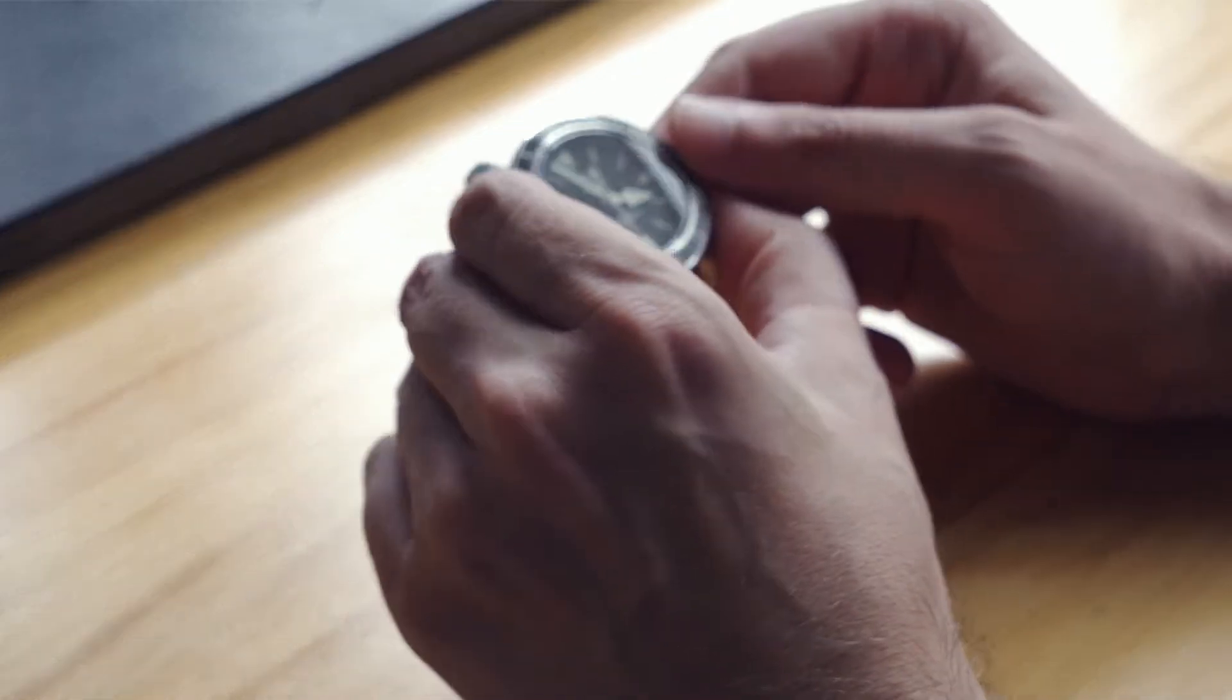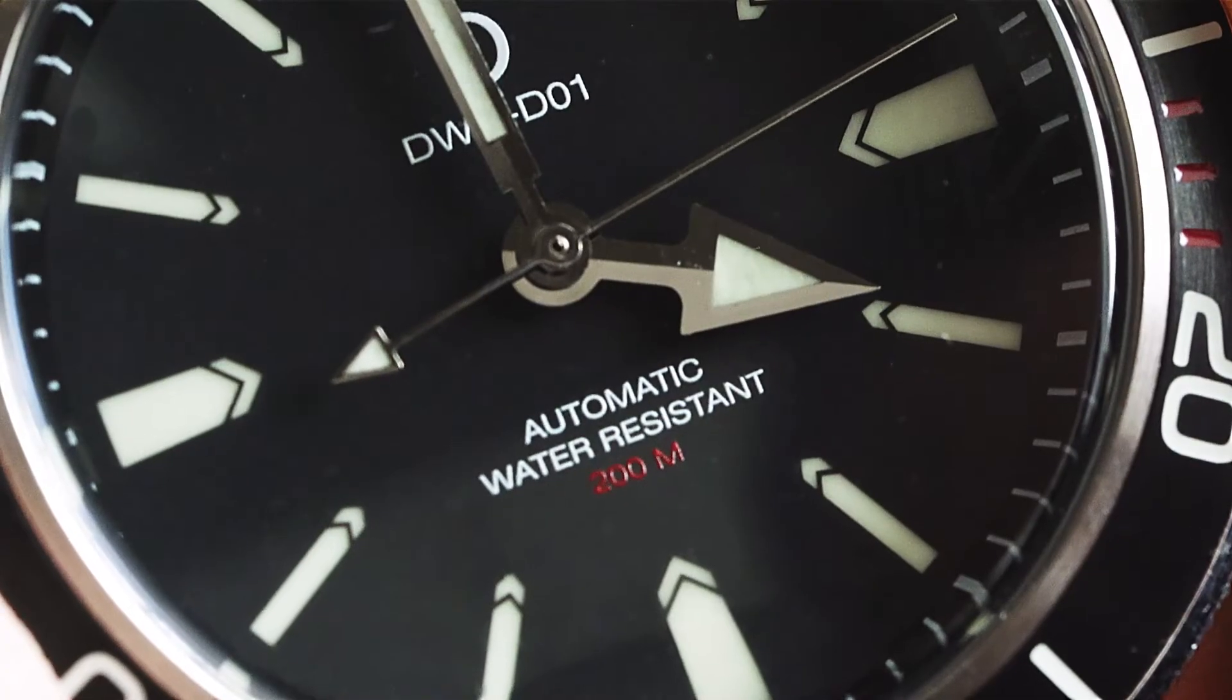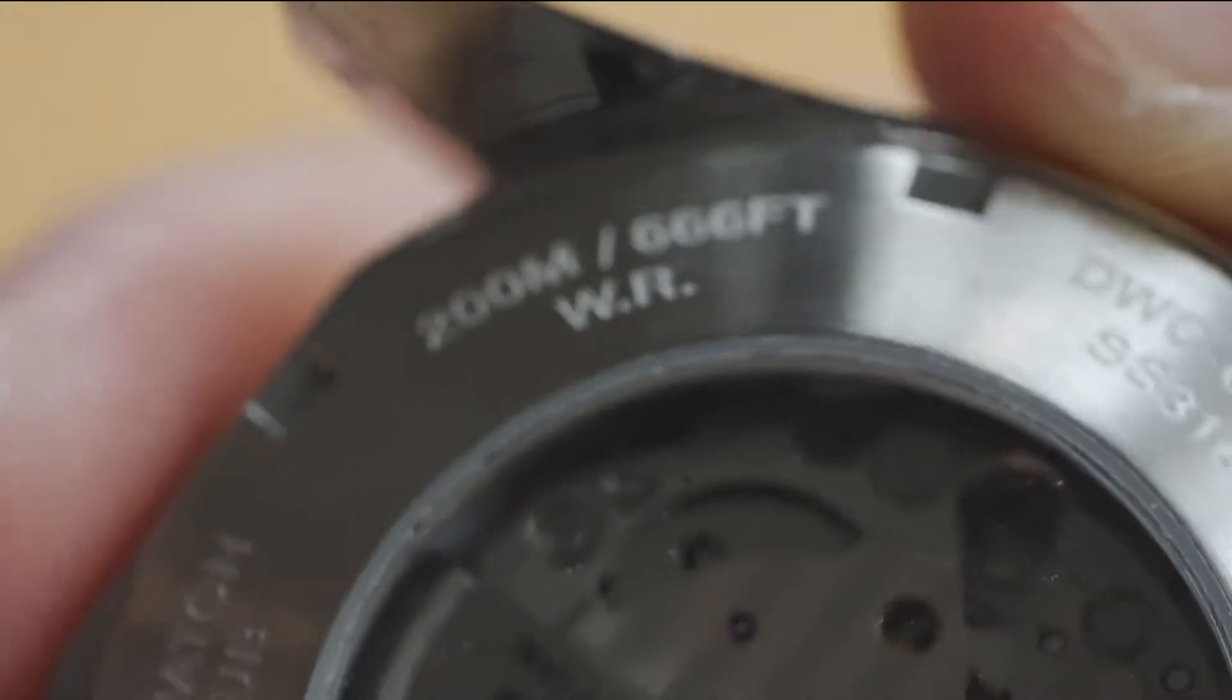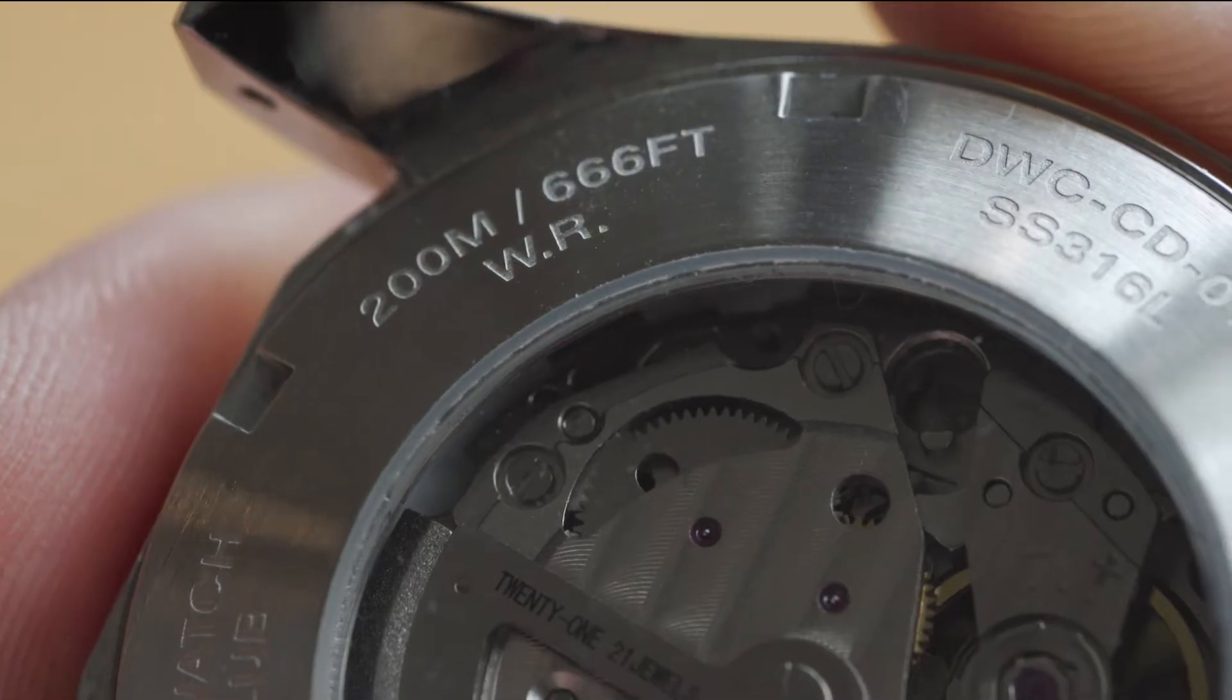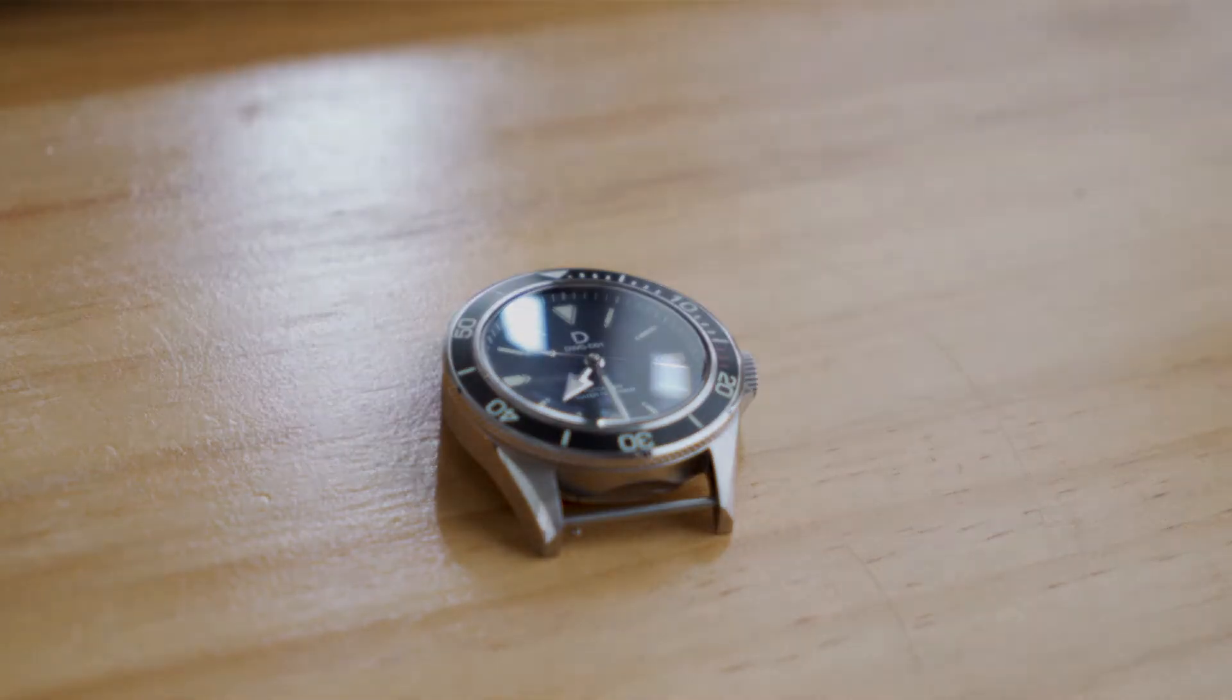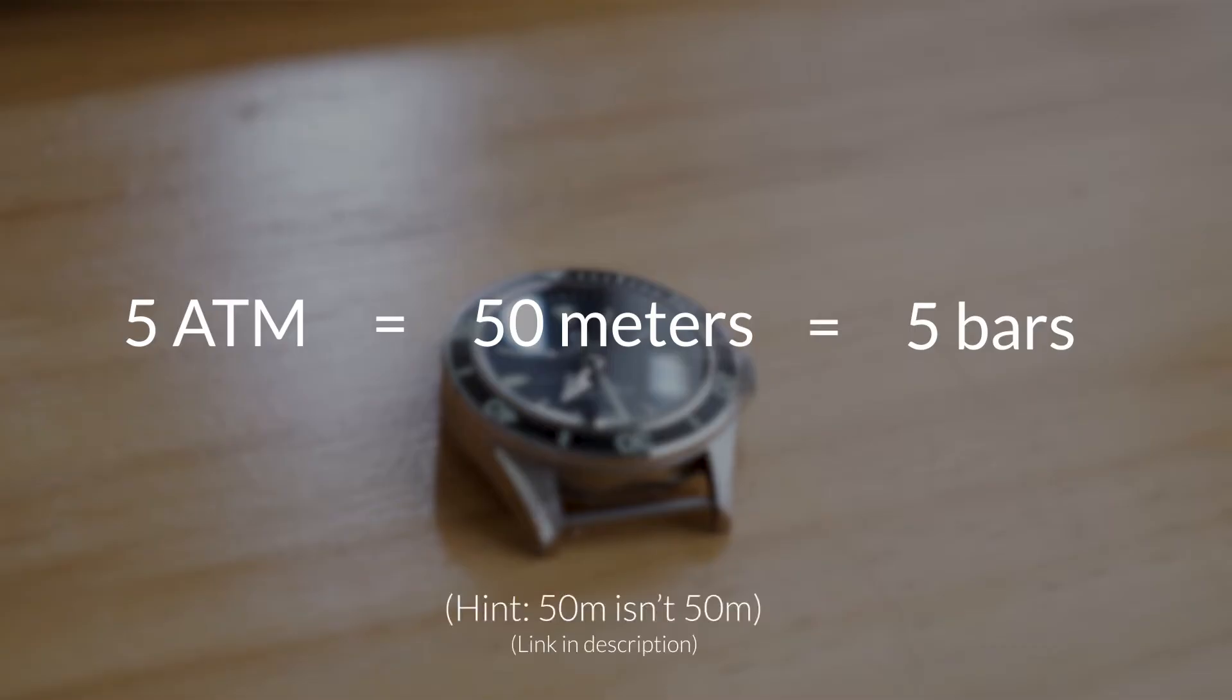First of all, you need to know the water resistance rating of your watch. You can usually find this on the dial or on the case back. It is usually labelled in ATM or in metres. Then you'll need to translate this figure into bar. A simple formula is 5 ATM equals 50M equals 5 bars. If you want to know more about the true meaning of this figure, check out our guide on it.